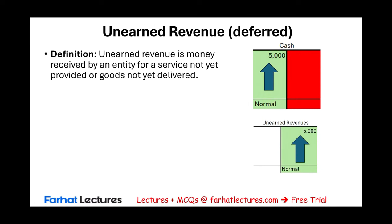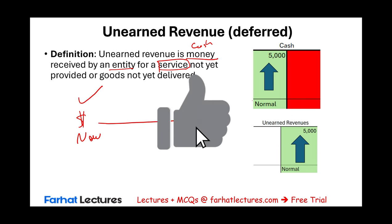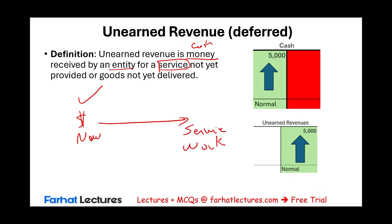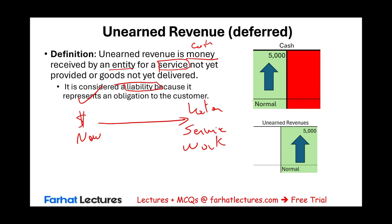Let's start by defining unearned or deferred revenue. Unearned revenue is cash received by an entity — a company or organization — for a service not yet provided, or goods not yet delivered. We got the money now and provide the service at a later time. So cash now, you do the work later. Don't let the word 'revenue' fool you — it's unearned, meaning it has not been earned yet. You earn revenue only when you do the work.